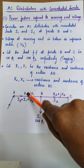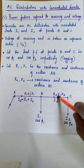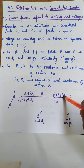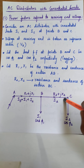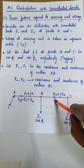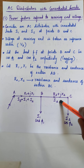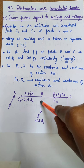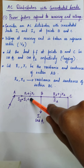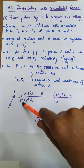Let R1 and X1 be the resistance and reactance of section AB. Let R2 and X2 be the resistance and reactance of section BC. In section BC, the load current I2 flows. In section AB, the current I1 plus I2 flows, which is nothing but the sending end current IS.